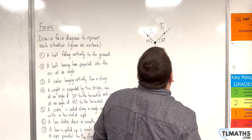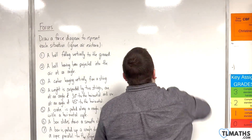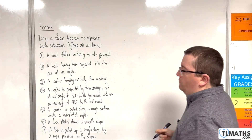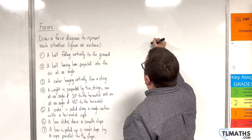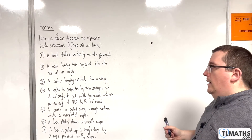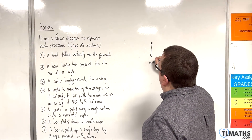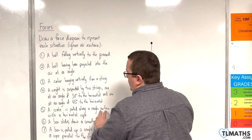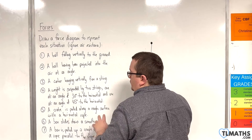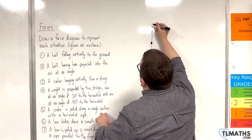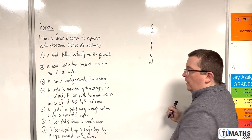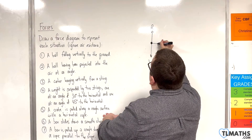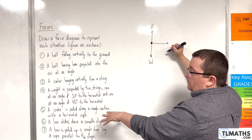Number five: a crate is pulled along a rough surface with a horizontal rope. Here's my crate. There will be weight acting vertically downwards. The crate is in contact with a rough surface, so because it's in contact with the surface there will be a normal reaction force acting vertically upwards. It's being pulled along, so there will be a rope — the horizontal rope.